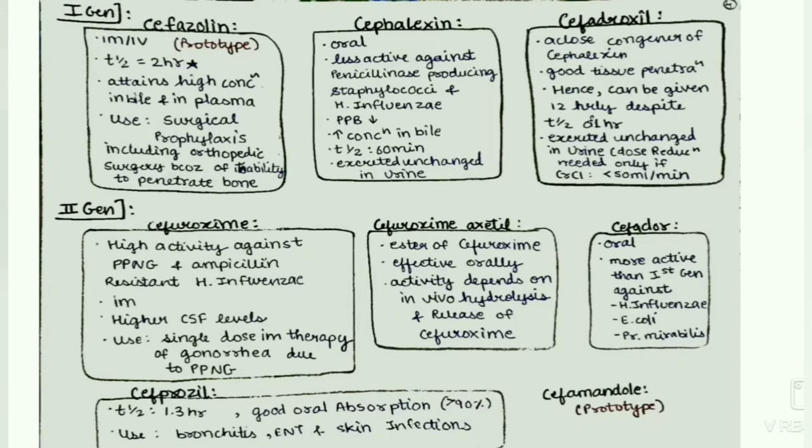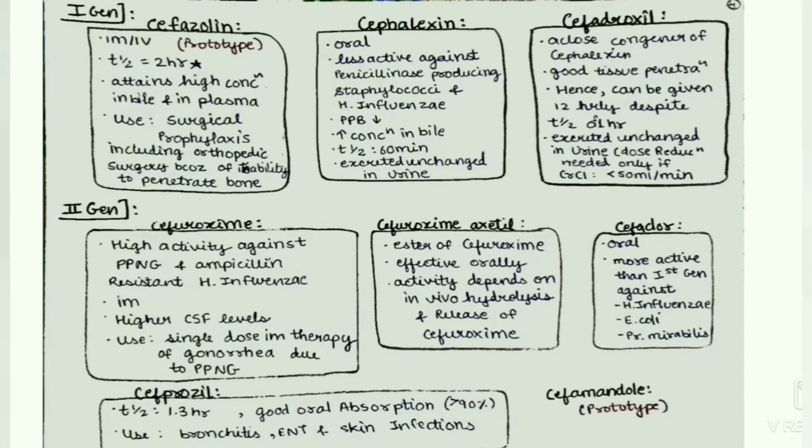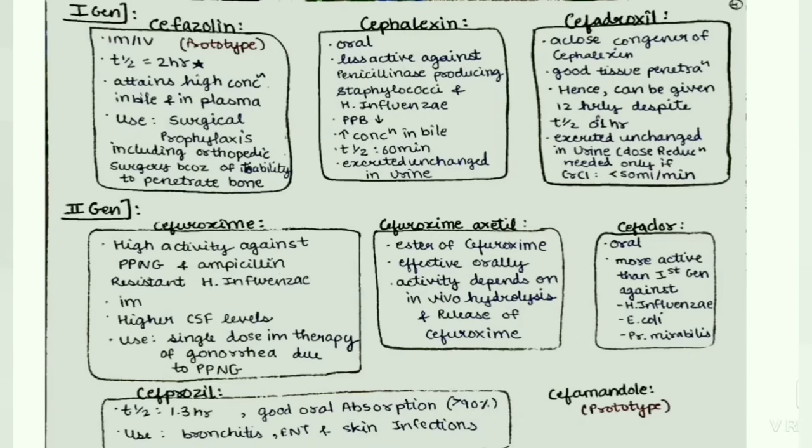Next, cefadroxil. It is a close congener of cephalexin. It has good tissue penetration, hence can be given 12-hourly despite the T-half of 1 hour. It is excreted unchanged in the urine. Dose reduction is needed only if the creatinine clearance is less than 50 mL per minute.